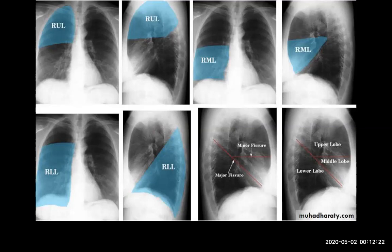On the right side, we have the right upper lobe — which occupies this area — the right lower lobe, and the right middle lobe, according to the transverse fissure, the oblique fissure (major fissure), and the transverse (minor) fissure. The middle lobe is located anteriorly in the lower part, just below the minor fissure, and the major fissure divides the upper and lower lobes. These are important concepts.